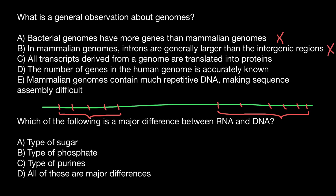An important note here is that the statement specifies mammalian genomes. In bacterial genomes, we usually do not see such regions like in eukaryotes — bacteria usually don't have introns.